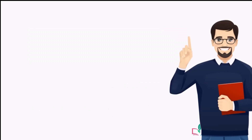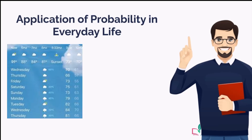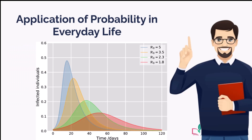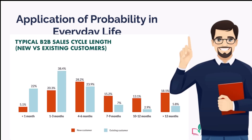Probability provides information about the likelihood that something will happen. It can be used in different areas of our everyday life. Meteorologists use weather patterns to predict the probability of rainfall. In epidemiology, probability theory is used to understand the relationship between exposures and the risk of health effect. In business, it is used to predict future levels of sales.